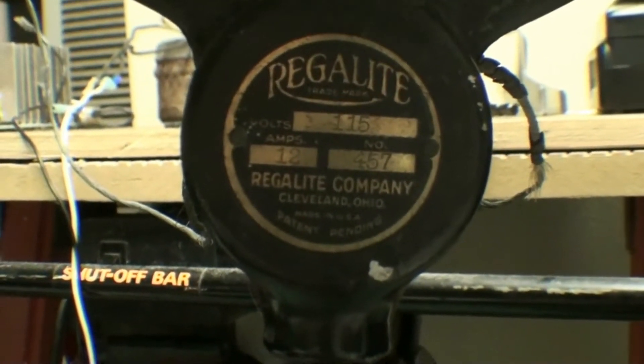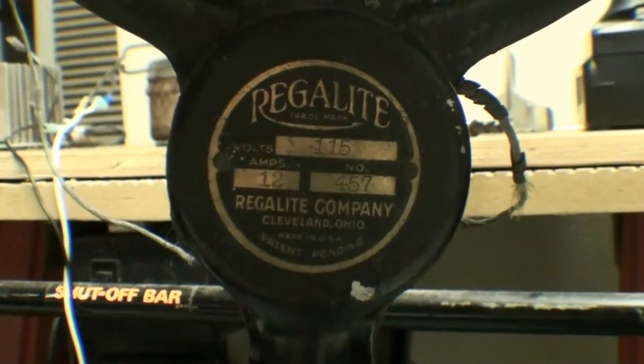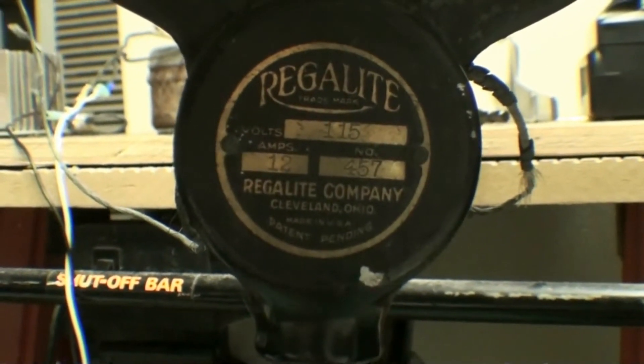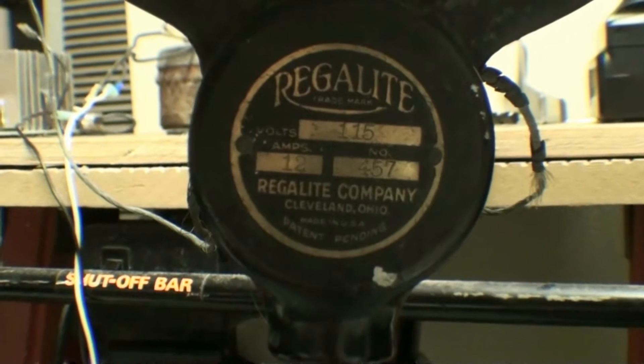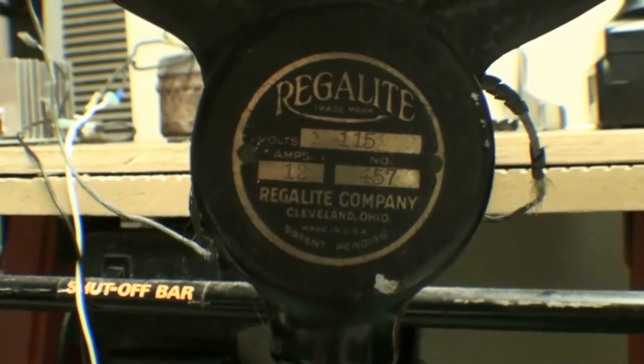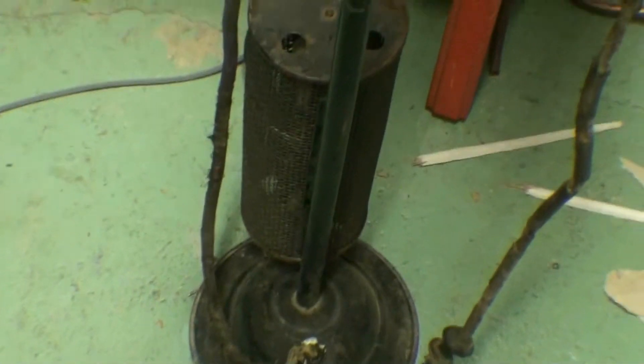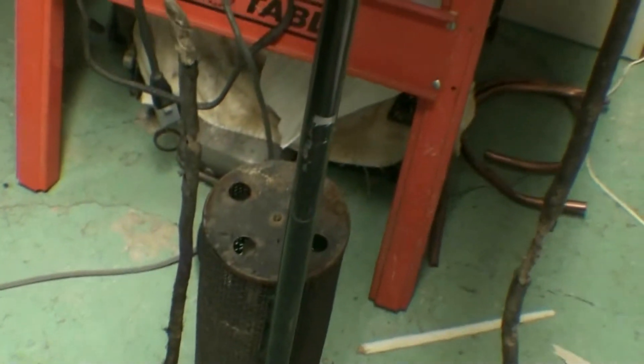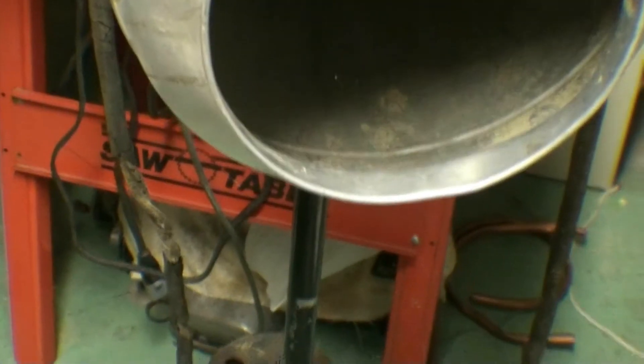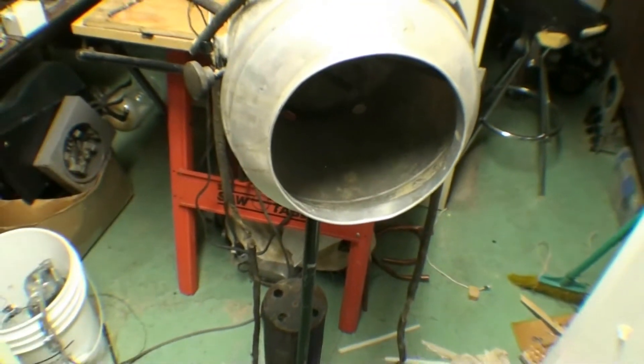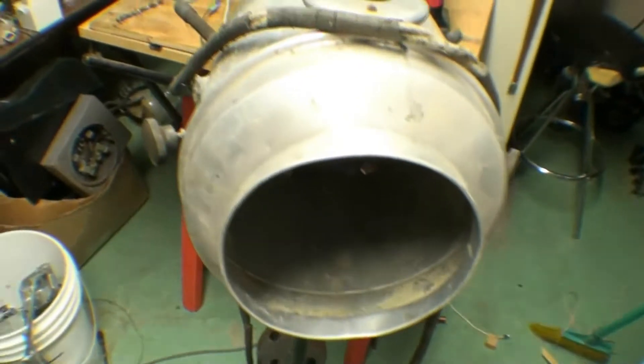Okay, so what we have here today is an antique Regalite model 457 carbon arc lamp. This one was actually an eBay find and it's not in the greatest condition, but it is complete and it's not damaged unlike the Fisher arc lamp over there.